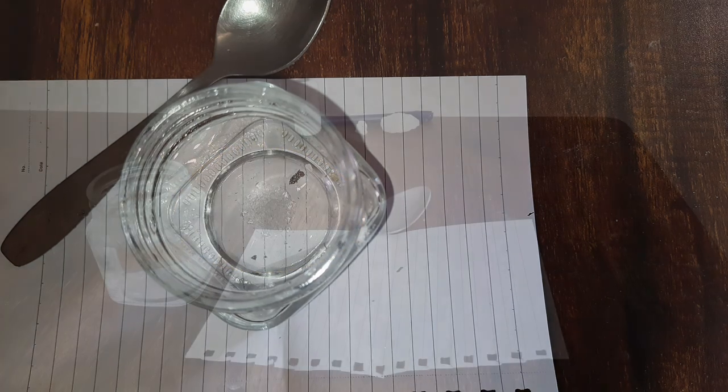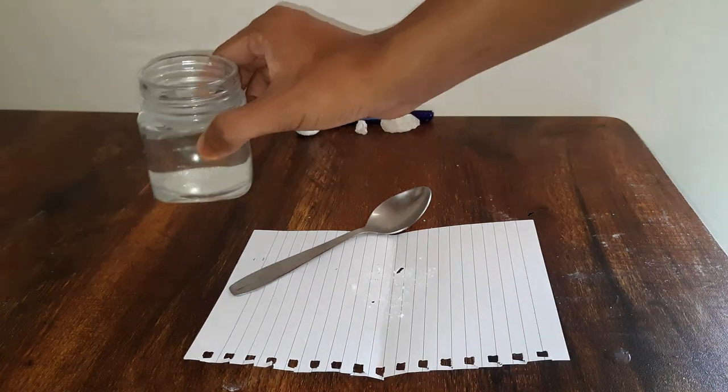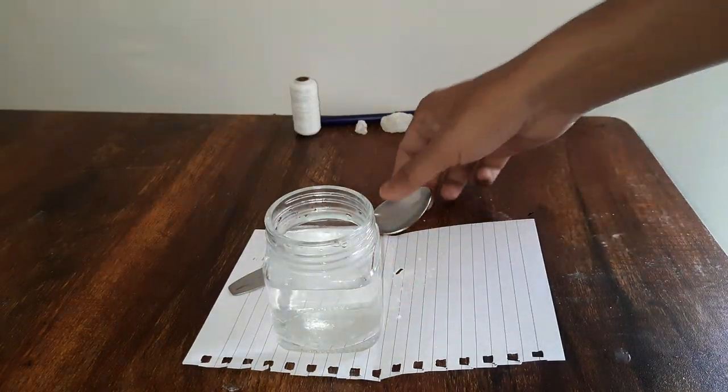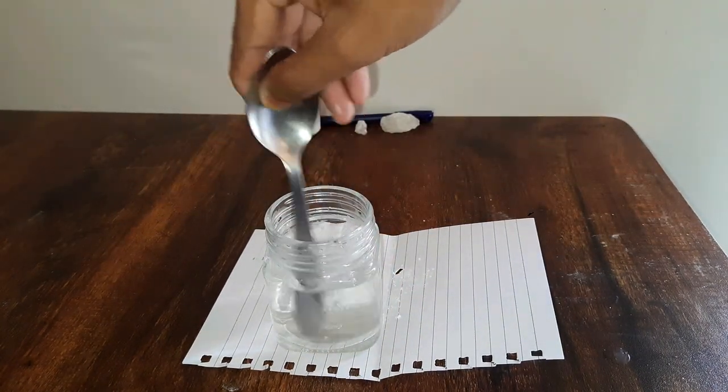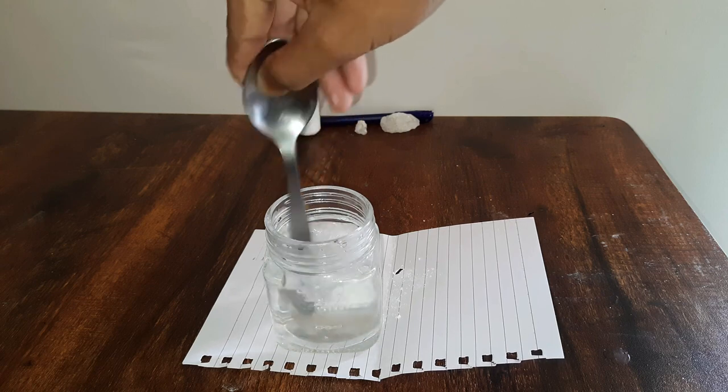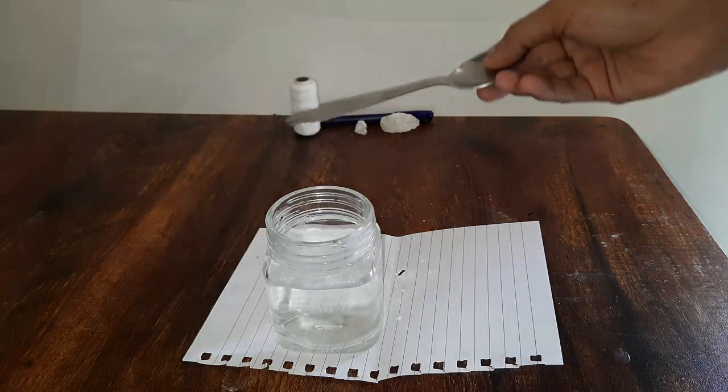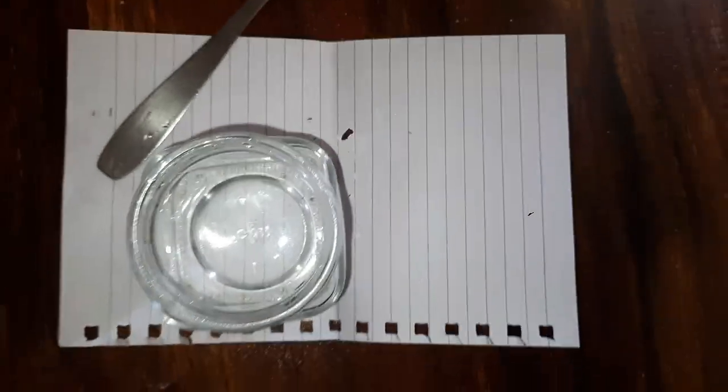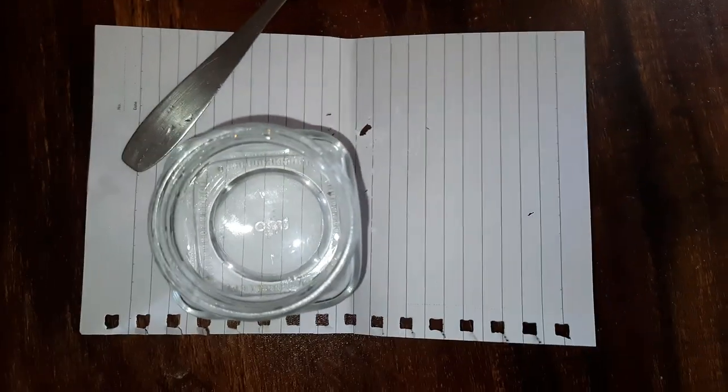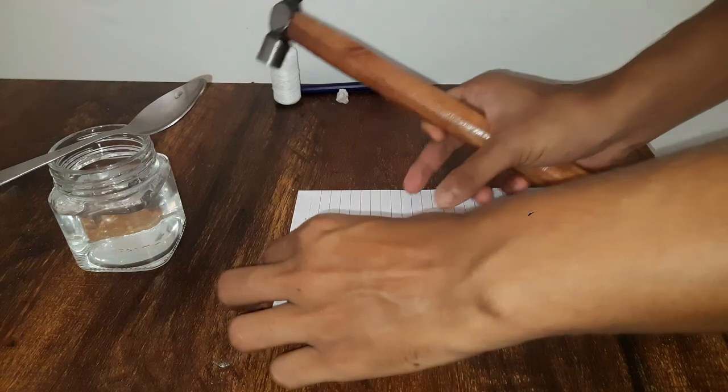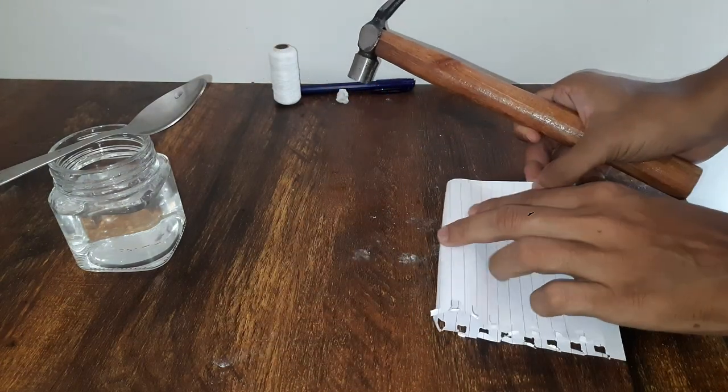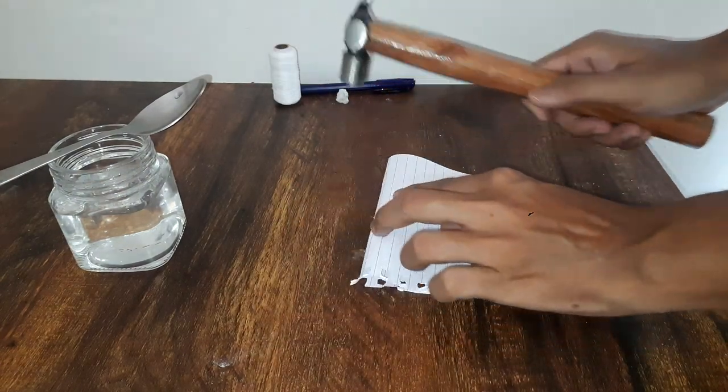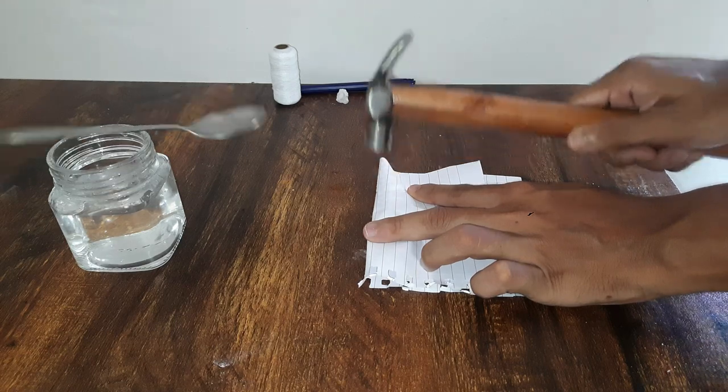So now we will heat this mixture and after heating we will try to dissolve the powdered alum again. And now we see that all of the alum has been dissolved. So now we will add some more alum into this mixture and then again try to dissolve it.